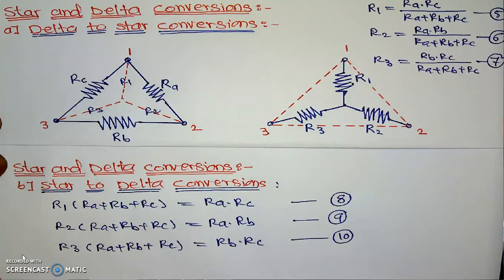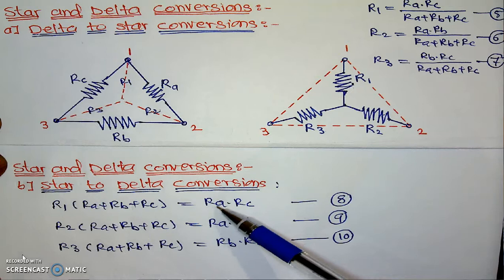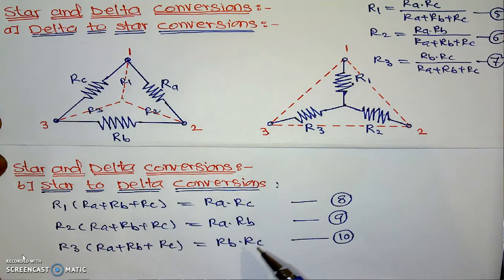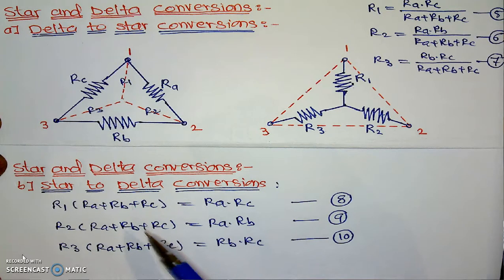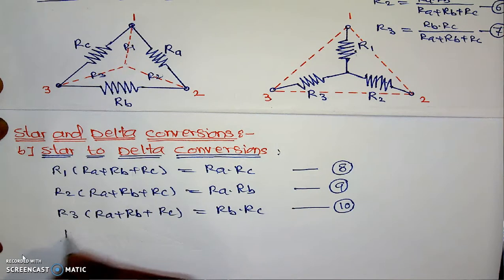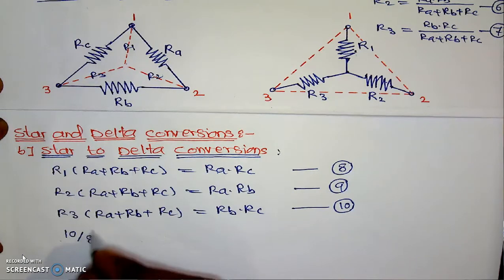Now we have equations number 8, 9, and 10. Here, we want to find the equations for Ra, Rb, and Rc in terms of R1, R2, and R3. Means we are solving Ra, Rb, and Rc each in terms of R1, R2, R3.